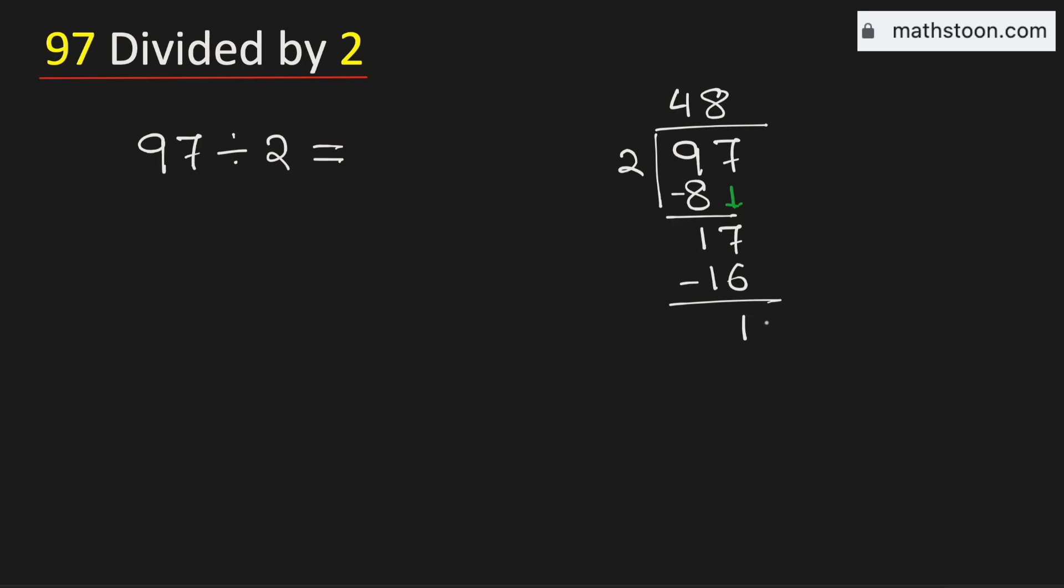That is why we will borrow one 0, and for that we need to put a decimal here. Now 2 times 5 is 10. Subtract, we get 0.